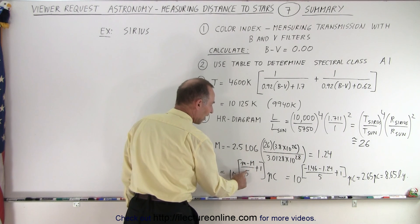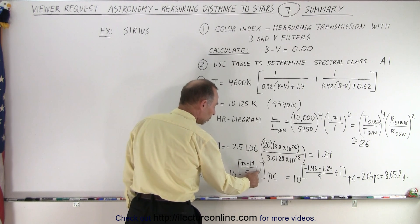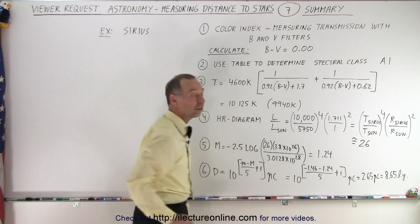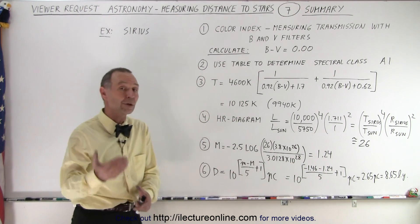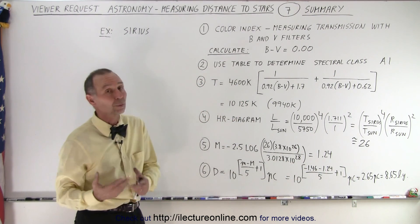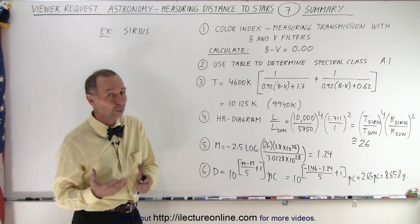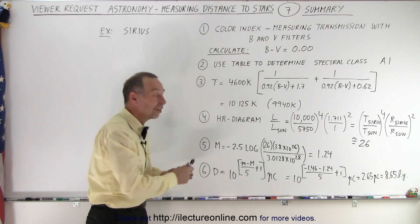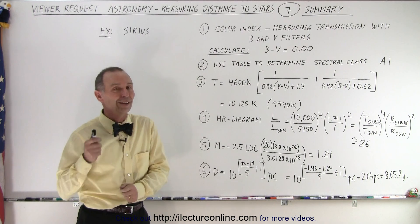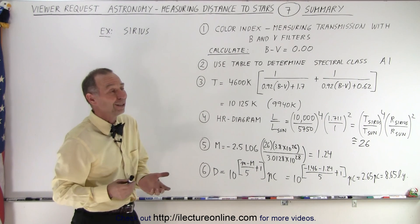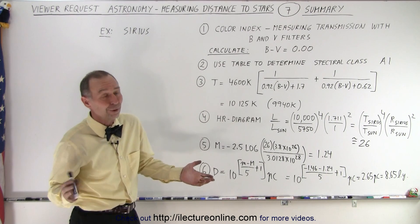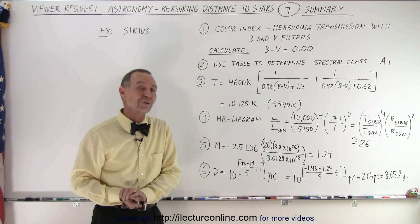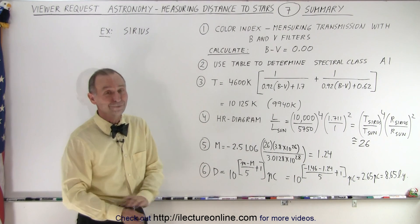We take that difference divided by 5, add 1 to it, use that as the exponent of 10, and that gives you the distance in parsecs. Then we convert that to light years, with 1 parsec being 3.26 light years. When you go through all that process, that's how we determine the distance to a star — and the best you can hope for is about 90% accuracy.